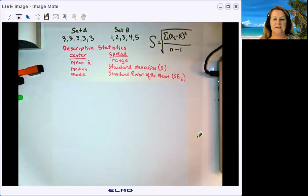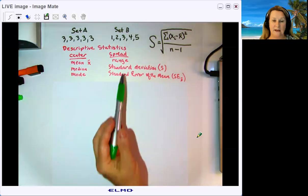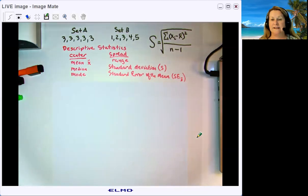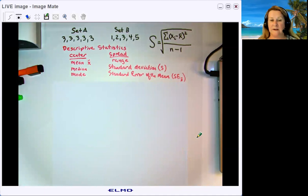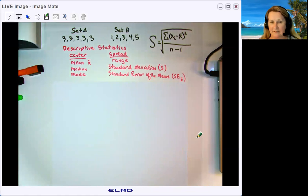To describe how spread out a data set is, you have range — which is the highest value data point minus the lowest value data point — standard deviation, which we're going to talk about in this video, and standard error of the mean, which I'll cover in my next video.